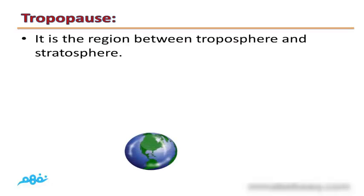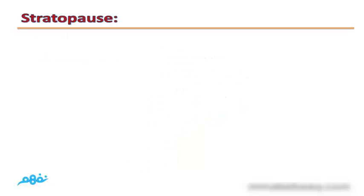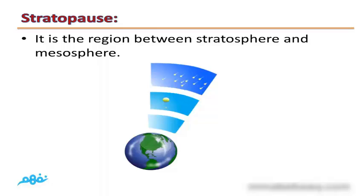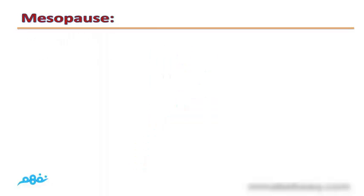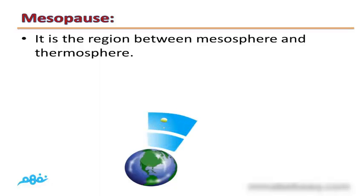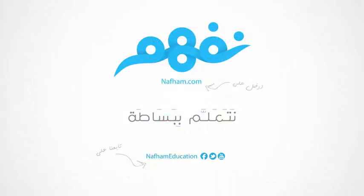The Tropopause is the region between the Troposphere and the Stratosphere. The Stratopause is the region between the Stratosphere and the Mesosphere. The Mesopause is the region between the Mesosphere and the Thermosphere. This is the end of lesson 1. Thanks for watching.